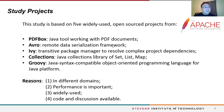This study is based on five widely used open-source projects from the Apache Software Community, including PDFBox, AVRO, Ivy, Collections, and Groovy. We selected these five projects because they are from different domains and performance plays an important role for all of them. Their source code and bug-tracking systems are also well organized.